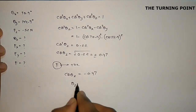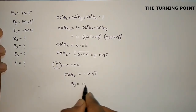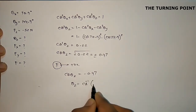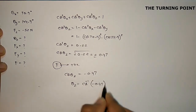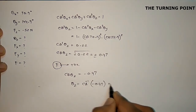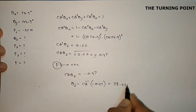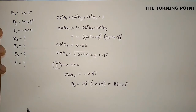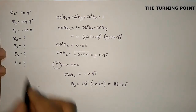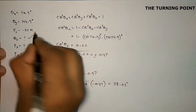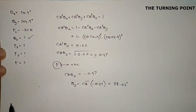From cos theta z = minus 0.47, we calculate theta z as cos inverse of minus 0.47. This gives an obtuse angle of 118.03 degrees. So theta z is now determined.